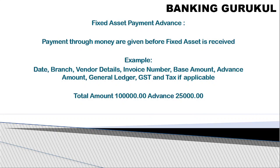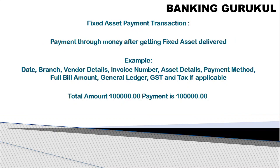Advance payment means paying money before receiving the fixed asset. For example, if we are purchasing a fixed asset worth 1 lakh and giving 25,000 as advance, we capture the payment date, branch, vendor details, invoice number, base amount (1 lakh), and advance amount (25,000). We also record which expense account is being used and the GST details if tax is applicable.